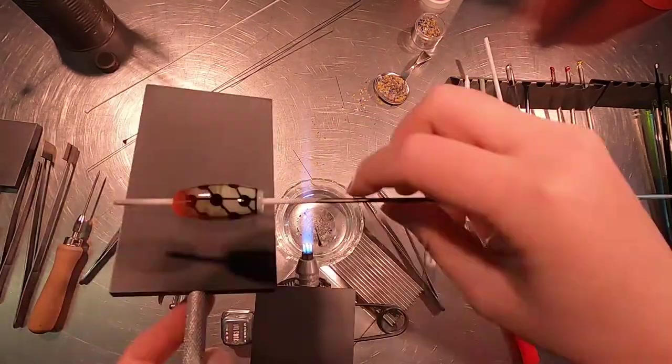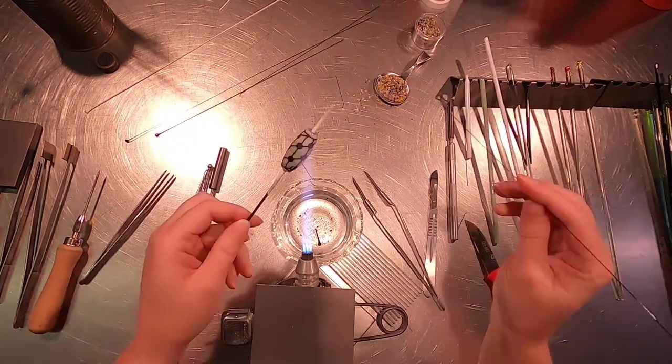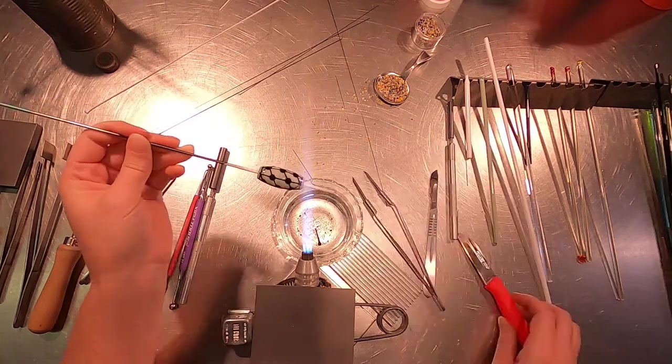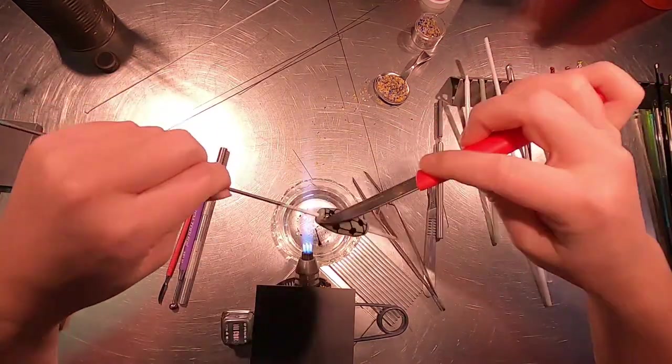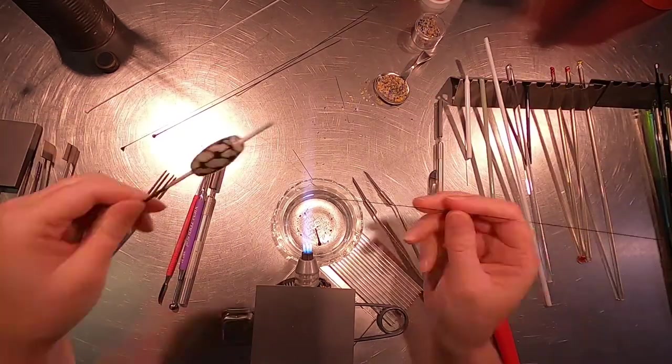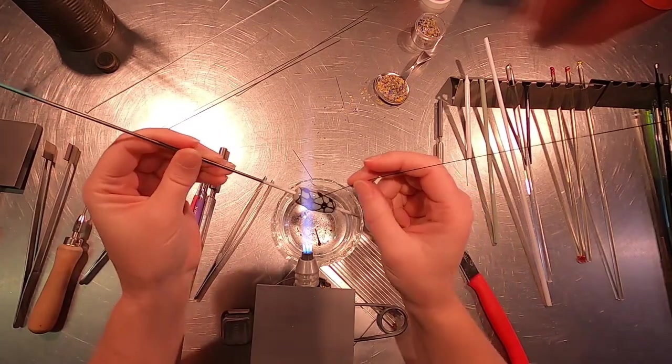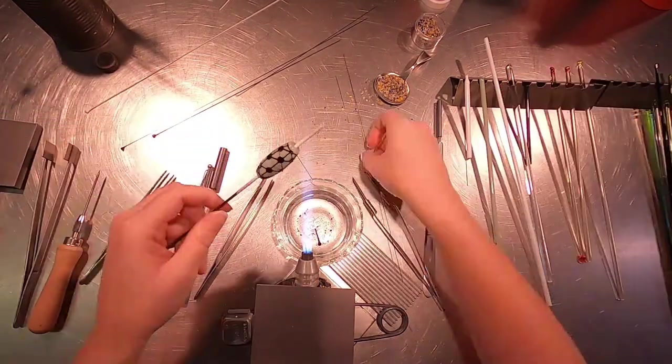Once this spiral layer has been straightened and melted in, I repeat the exact same process going in the opposite direction. Wrap, pat, straighten, melt. Again, heating, wrap, pat, straighten, and melt.